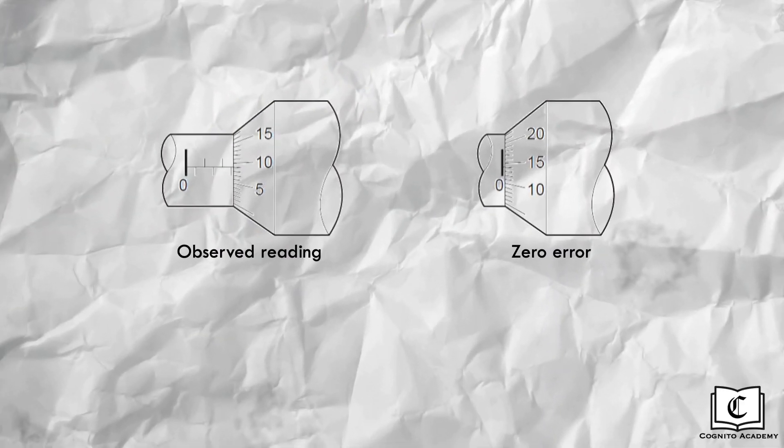Now, let's obtain an accurate reading from the micrometer screw gauge. On the left is its observed reading, while the right shows the zero error of the micrometer screw gauge. First, let's read the observed reading. The main scale gives 2.5 mm, while the timbre scale gives 0.09 mm. Adding both gives an observed reading of 2.59 mm.